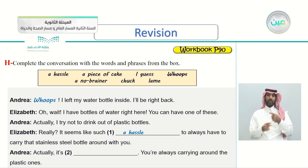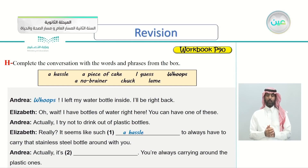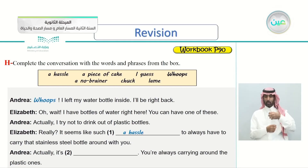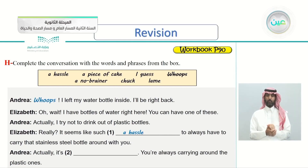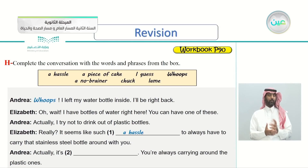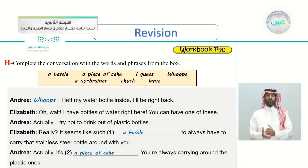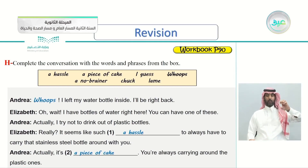Andrea replies 'actually, it's...' — and here we have the second gap — '...you're always carrying around the plastic ones.' So what is answer number two? That's correct: 'a piece of cake.' Andrea says 'actually, it's a piece of cake — you're always carrying around the plastic ones.'